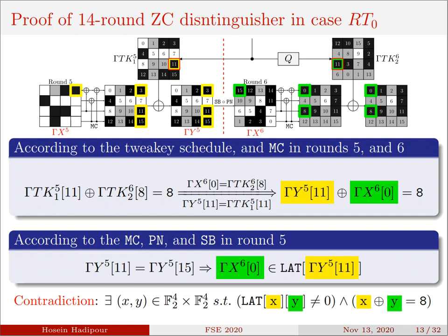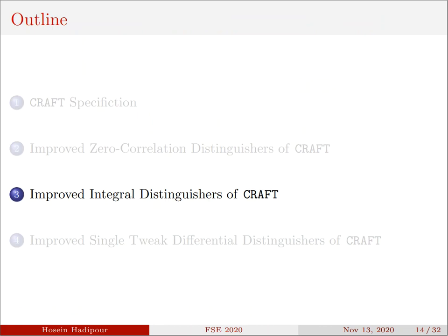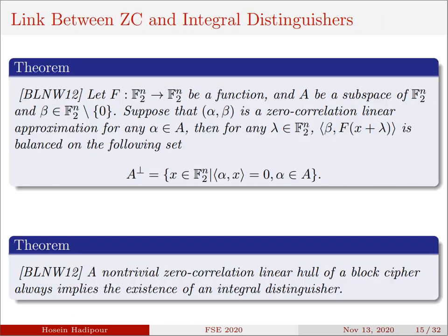As you can see, the contradiction occurs in bit level in this case, whereas the contradiction occurs in word level for our distinguishers in cases RT2 and RT3. Here, I conclude this part and move on to discuss about the integral distinguishers of CRAFT. In ASIACRYPT 2012, Bogdanov and Massey revealed a fundamental relation between zero-correlation and integral distinguishers, where they proposed this theorem for the first time.